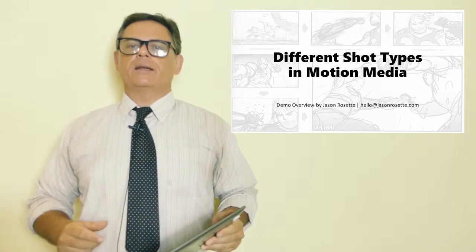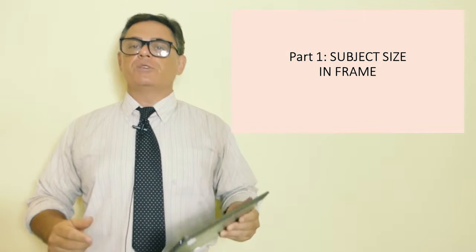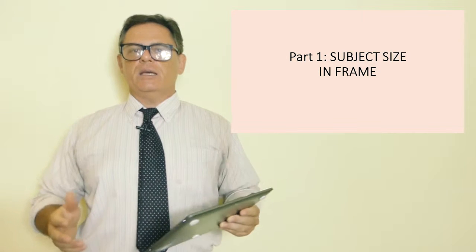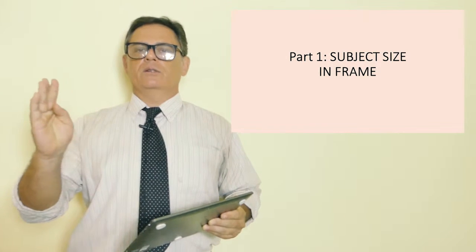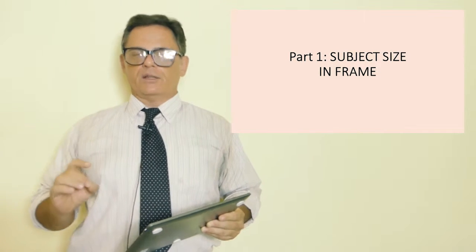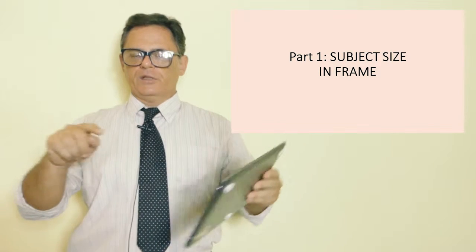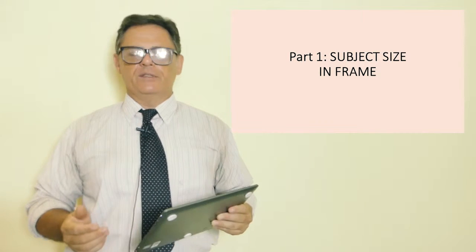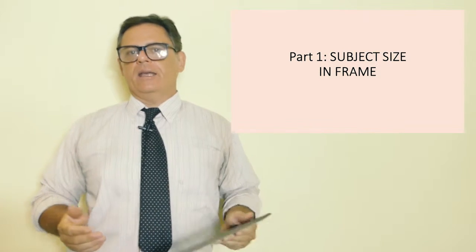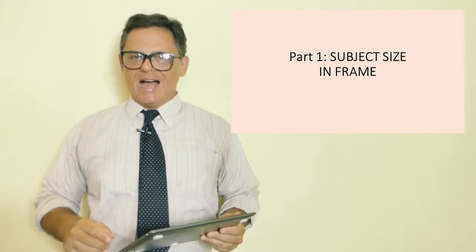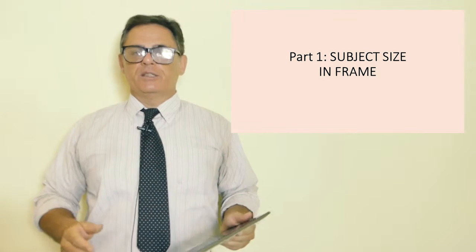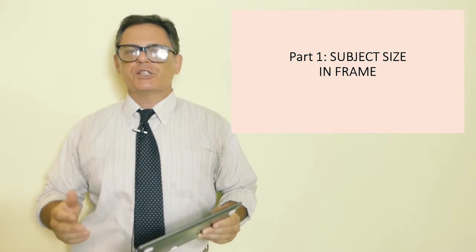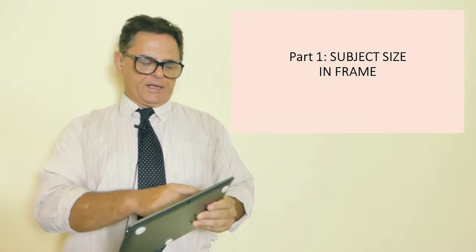The first thing we'll look at is the subject size in frame. This is part one. The size of the subject in the frame, the subject being the character, object, the thing that is the center of attention in the physical frame of the camera. And by the way, since the introduction of the smartphone, now even the frame is changing. Traditionally we had a horizontal frame 16 by 9 or 4 by 3 and now that's changing. In some instances, it's a vertical frame. But for the sake of our discussion, we'll be talking about the traditional horizontal frame.